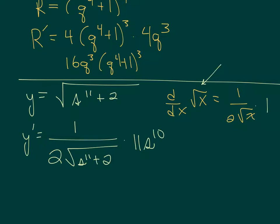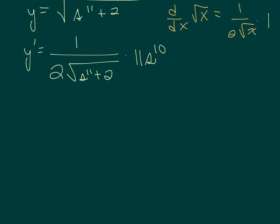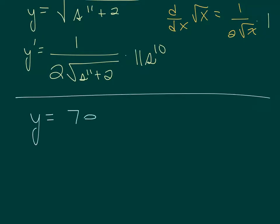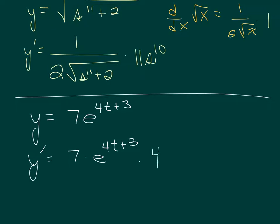If I have an exponential — so y equals 7e to the 4t plus 3 — throw the constant out front. The derivative of e to the anything is e to the anything times the derivative of the anything. The derivative of 4t is 4, and 3 is a constant. So I get 28e to the 4t plus 3.